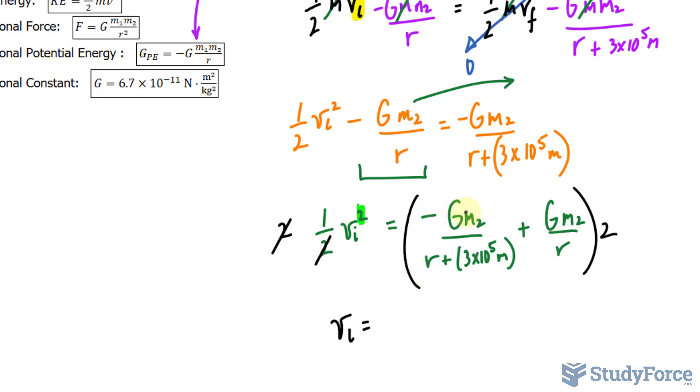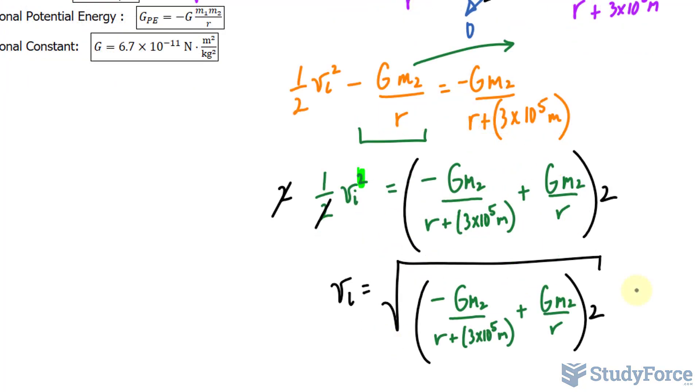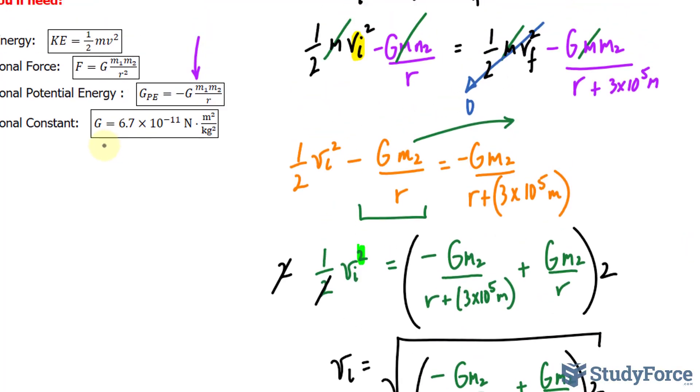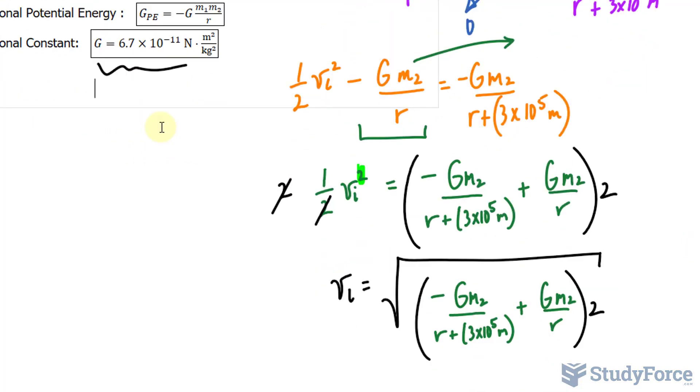So the exact same expression, but square rooted. As you can see, this capital G is a gravitational constant, and it's provided right here for us. In addition, the radius of the Earth is equal to 6.4 times 10 to the power of 6.